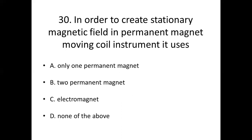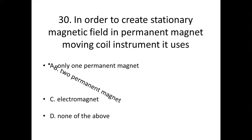30th bit: In order to create a stationary magnetic field in a permanent magnet moving coil instrument, it uses dash. Option A: Only one permanent magnet. Option B: Two permanent magnets. Option C: Electromagnet. Option D: None. Answer — Option B: Two permanent magnets.